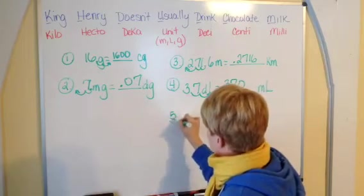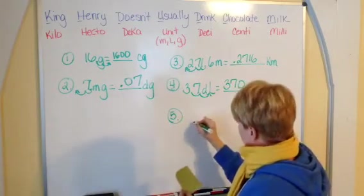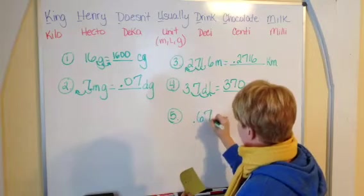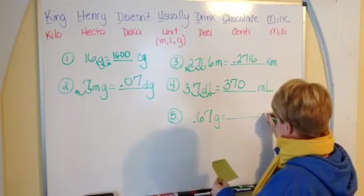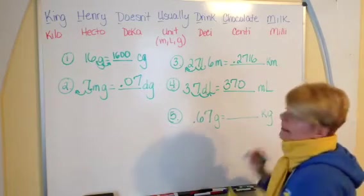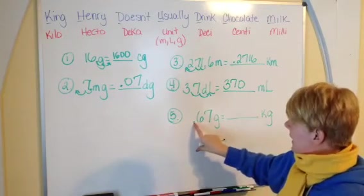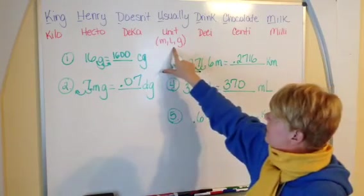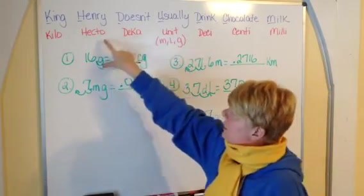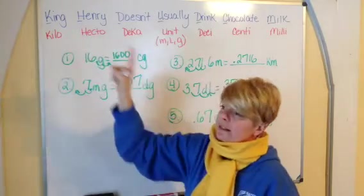Number five, we'll do one more. We've got 0.67 grams, we're going to find out how many kilograms that is. Again, you've got your decimal point, so you're going to start at grams, and you're going to travel one, two, three places to the left.